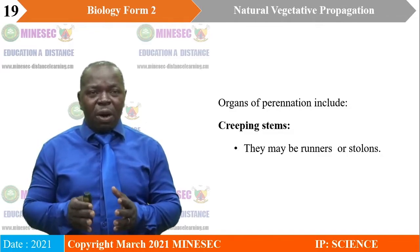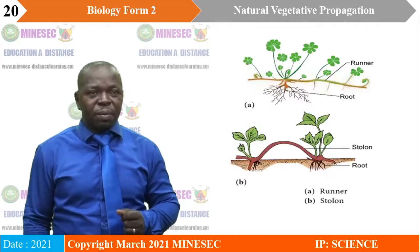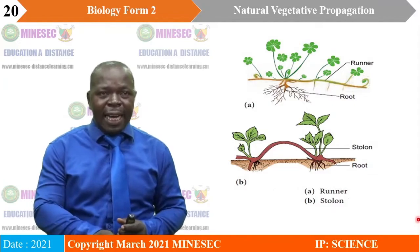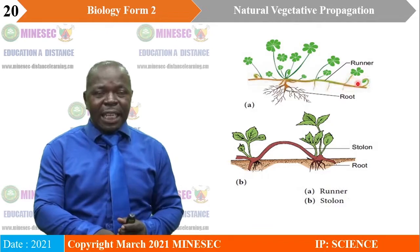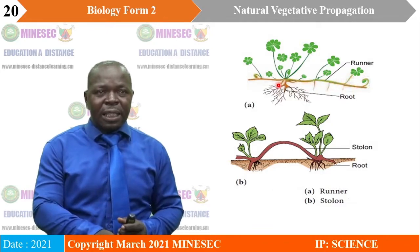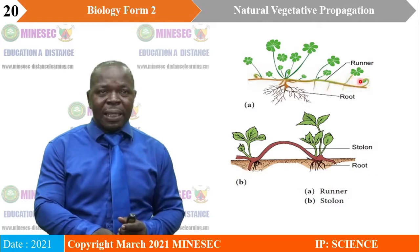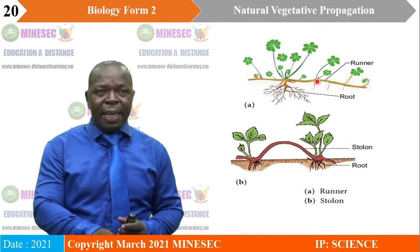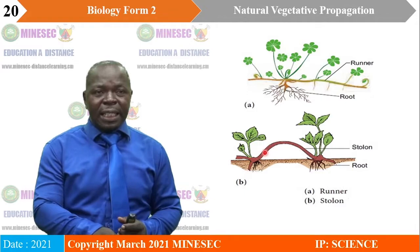We can see an example of a runner here. Common plants in our environment which have runners include sweet potato — they have creeping stems which creep on the surface of the earth. We also have stolons — this is a creeping stem that can be below or above the soil.